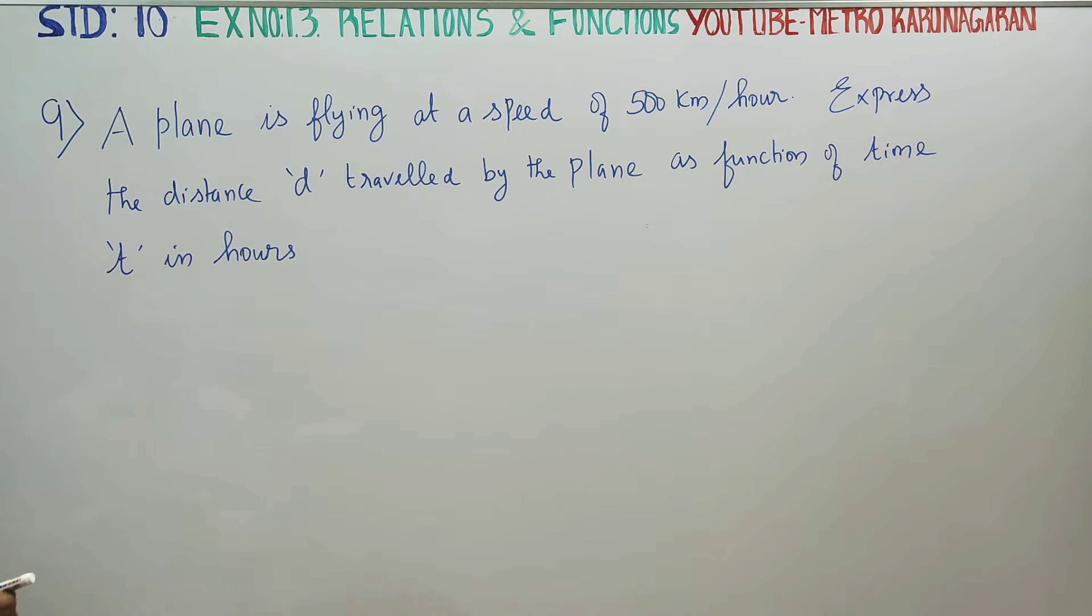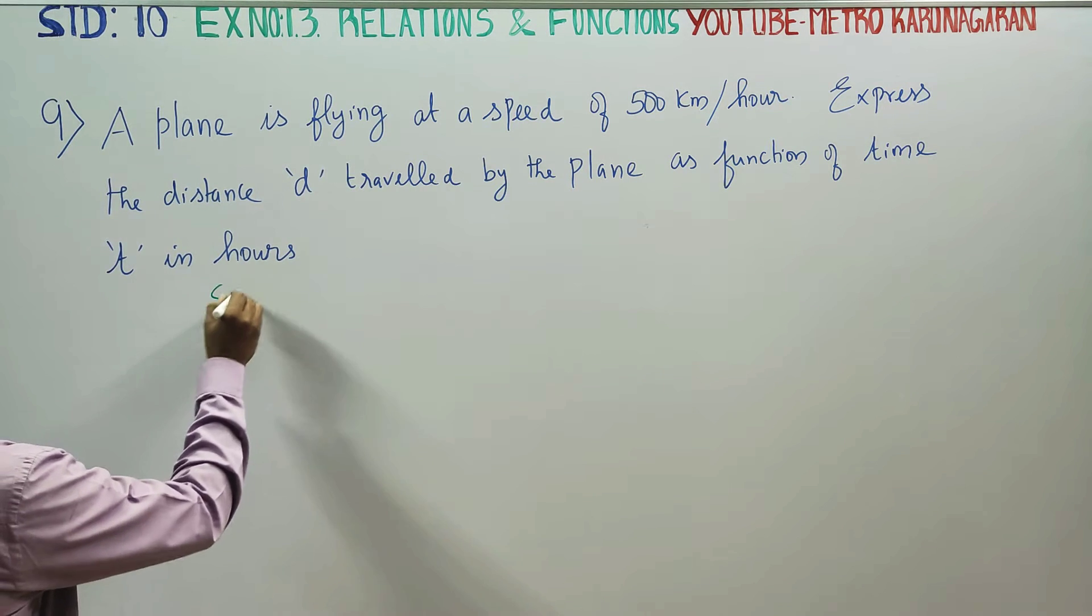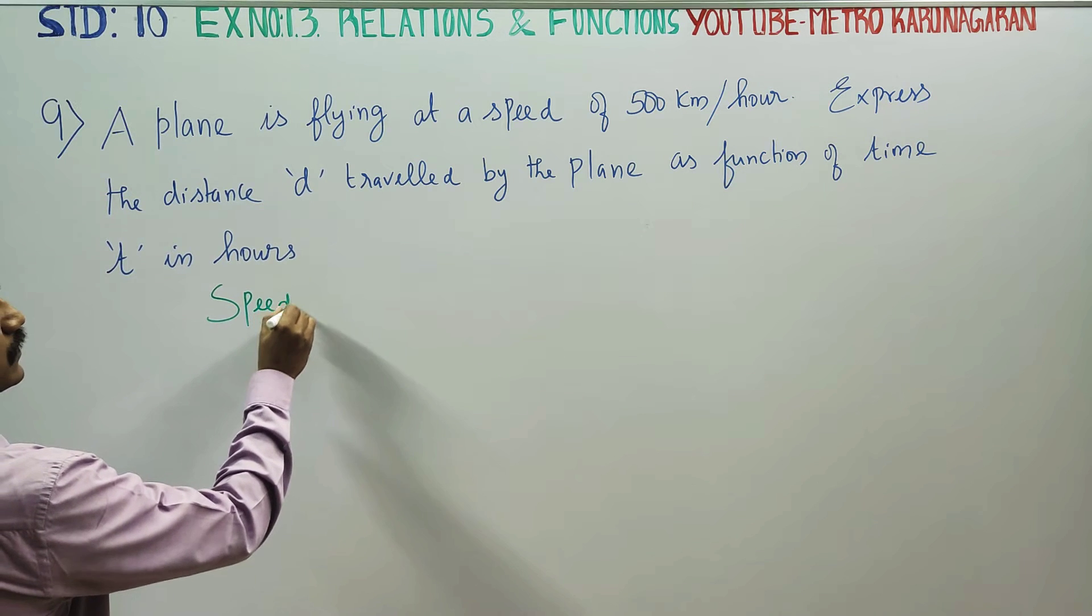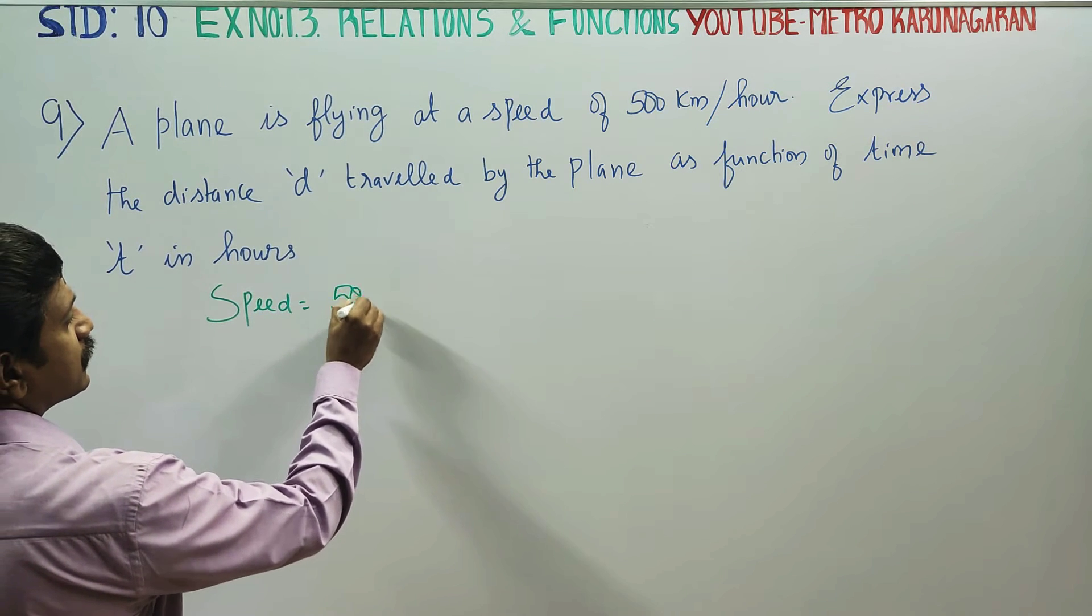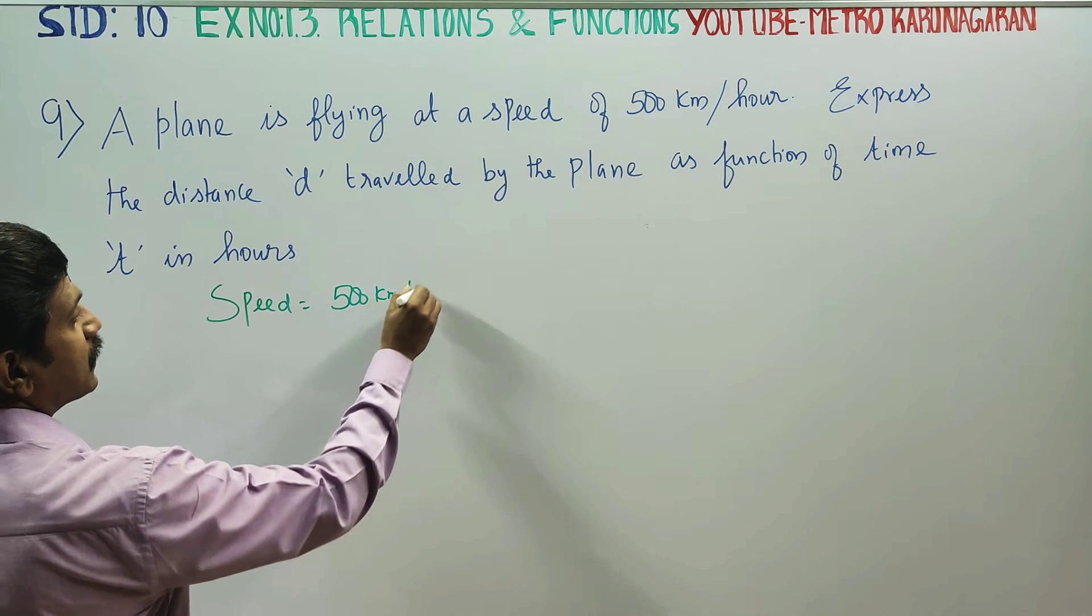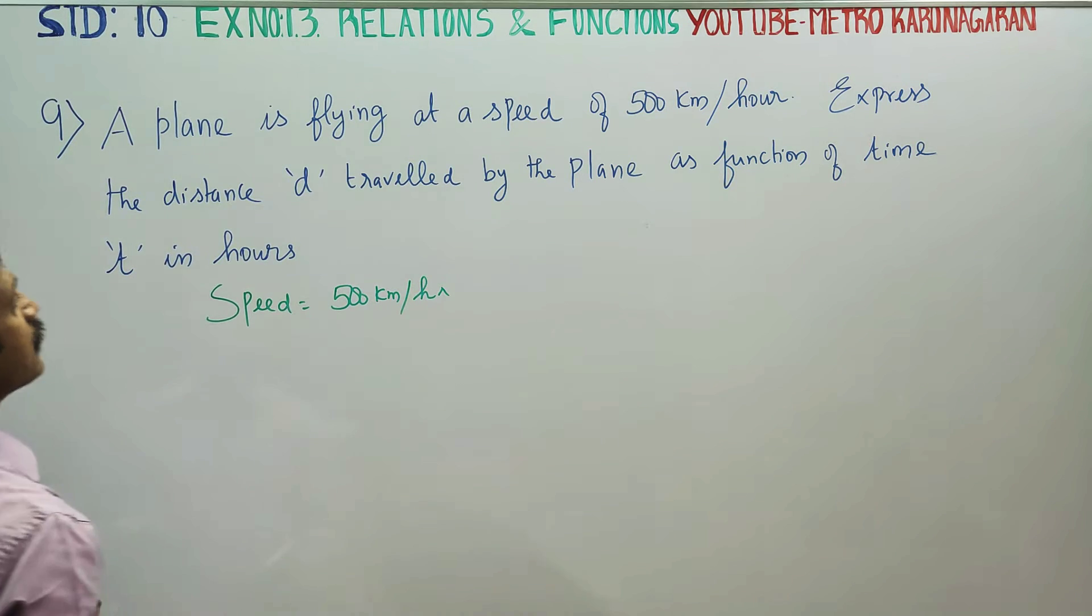Speed is equal to 500 km per hour. Express the distance d traveled by the plane as a function of time t in hours.